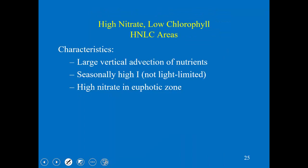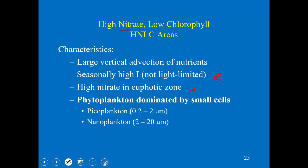What's characteristic about HNLC regions? Nutrients are being brought up by upwelling. Light is not limiting — certainly in the summer there's plenty of light. The whole characteristic is it's high nitrate. Chlorophyll is higher than what we see in the gyres, but the point is it's low compared to the amount of nutrients present. Another characteristic that should confuse you is that the phytoplankton are really small — we see lots of picoplankton and nanoplankton. That's confusing because we expect big phytoplankton when nutrient concentrations are high, yet here with high nutrients the small cells are winning out.